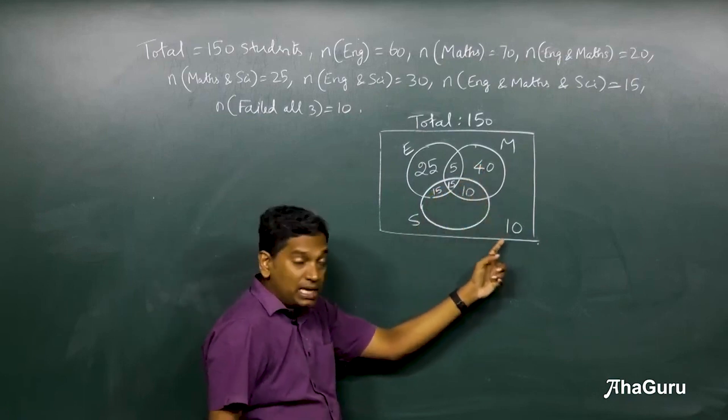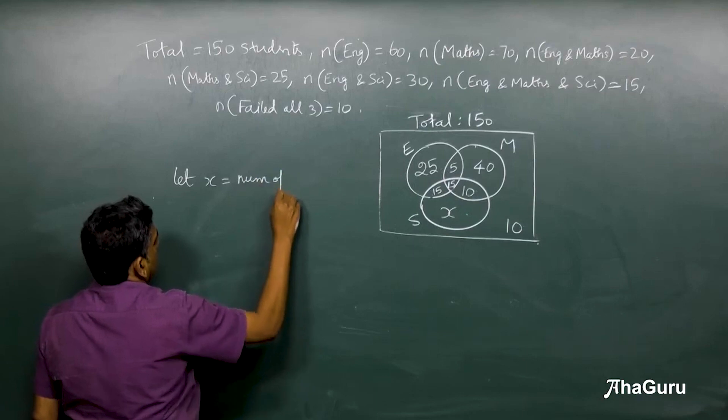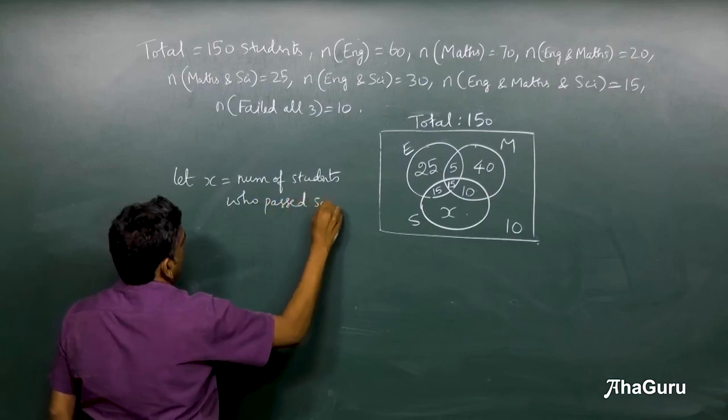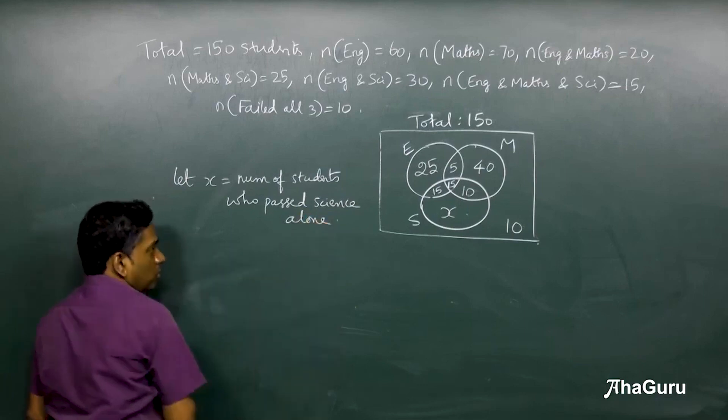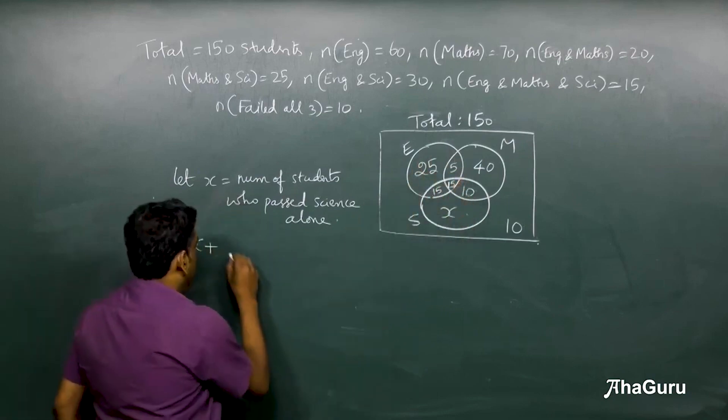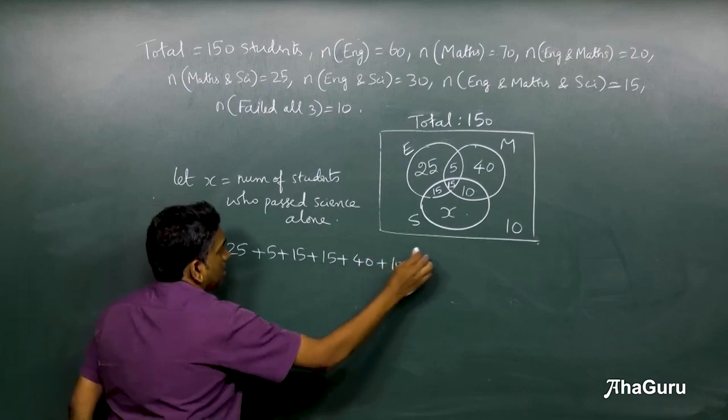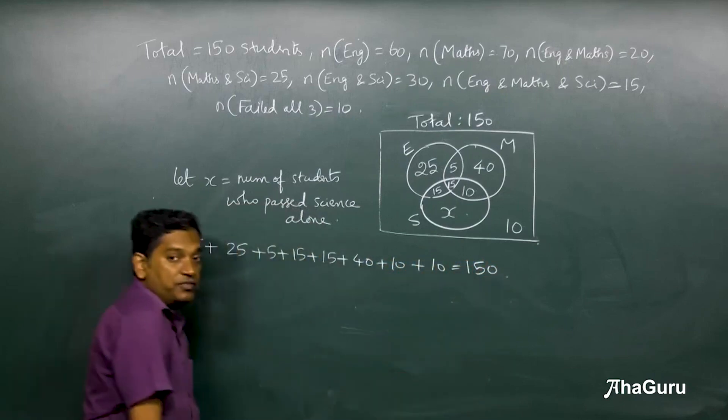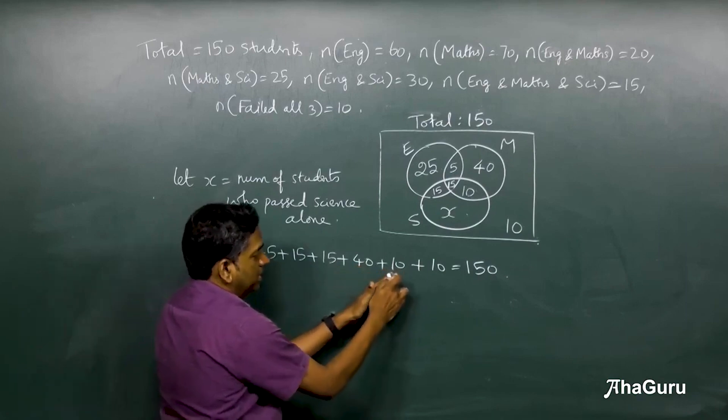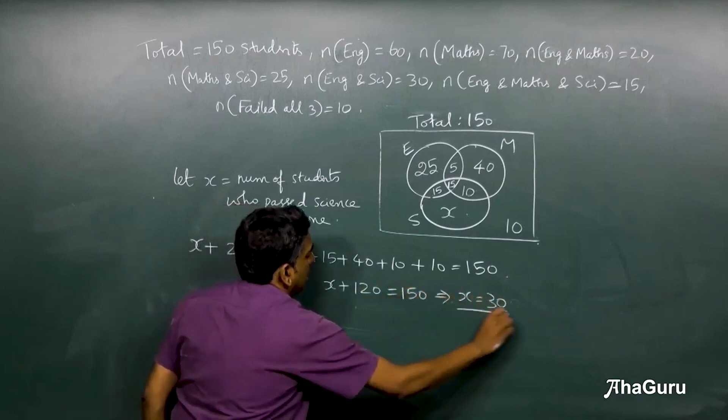So let x equals number of students who passed Science alone. 25 plus 5 plus 15 plus 15 plus 10 plus 40 plus 10 plus x equals 150. So 30, 45, 60, 100, 110, 120. So x plus 120 equals 150, which means x is 30.